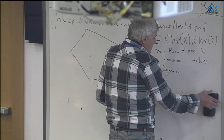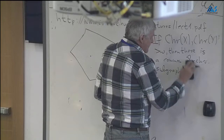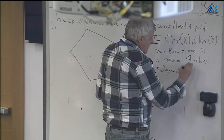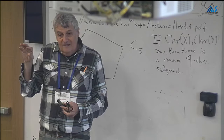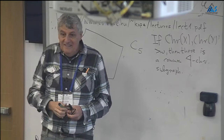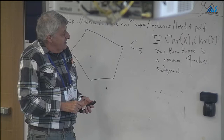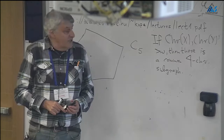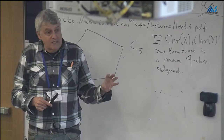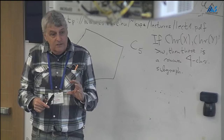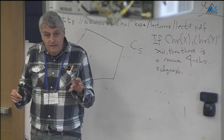Then others asked: is it true that any two uncountable chromatic graphs have a common finite 4-chromatic subgraph? And this is not known. The point is that 3-chromatic graphs can easily be described — these are exactly those graphs which contain an odd circuit. 3-chromatic if and only if there is an odd circuit. So this is the full characterization of 3-chromatic graphs.